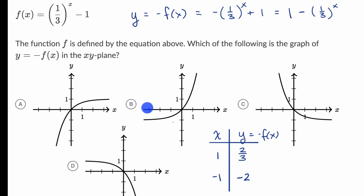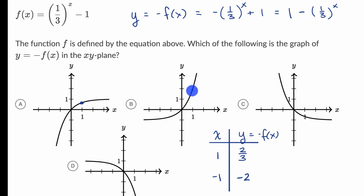Now let's see by inspection which of these graphs contain these two coordinates. The point (1, 2/3) — that looks about right on graph A, so this one is looking pretty good. For B, at x equals one the value is definitely larger than two-thirds, so I'd rule that one out. For C, at x equals one it looks like negative two-thirds, so I'd rule C out. And for D, there's definitely nothing there, so I'd rule D out.